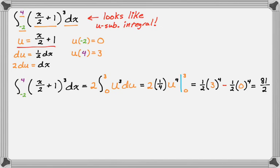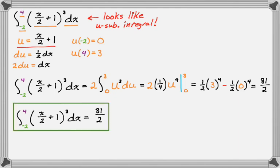And then you want to remember that what we actually did was we evaluated from negative two to four of x over two plus one cubed. And we found an equivalent integral, evaluated the simpler integral, and the answers are the same. So we actually found that the value of our definite integral is 81 over two. And that's how we do it. So I hope you found this helpful, and good luck with that.